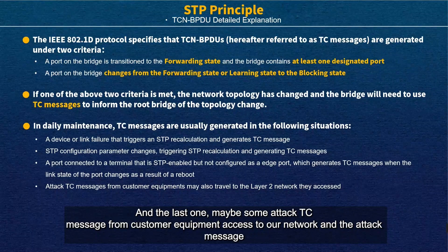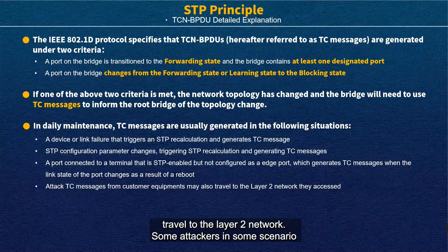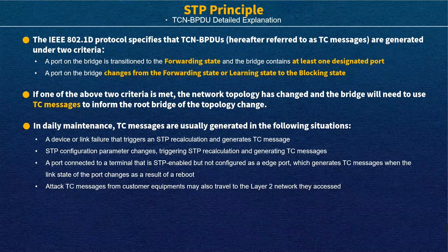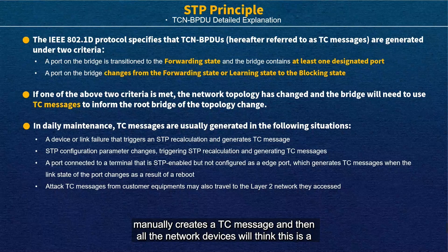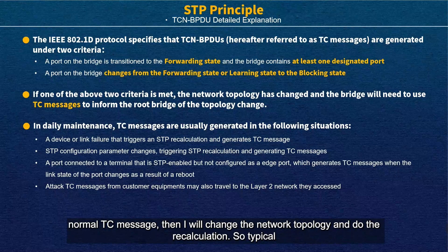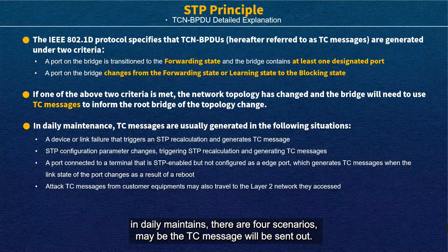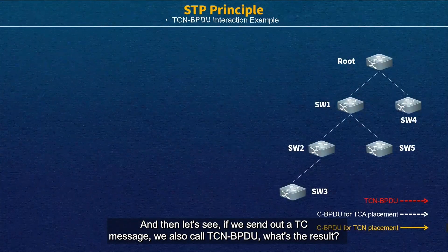The fourth scenario is an attack: TC messages from customer equipment may reach the Layer 2 network, or an attacker manually creates TC messages. All network devices will treat these as normal TC messages, trigger recalculation, and change the network topology. These are the four typical daily maintenance scenarios in which TC messages are sent.